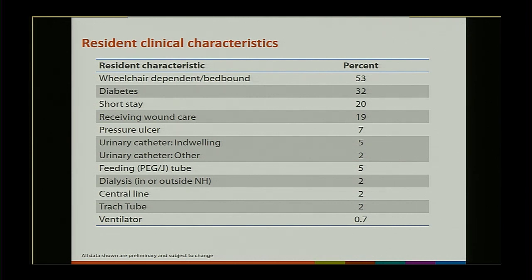In terms of clinical characteristics: more than half of nursing home residents in these facilities on the survey date were wheelchair-dependent or bed-bound. 32% had diabetes, 20% were considered short-stay post-acute care residents. 5% had indwelling urinary catheters, 2% had other types of urinary catheters, and central lines were quite low at 2%. This gives you a sense of what residents looked like within the participating facilities.